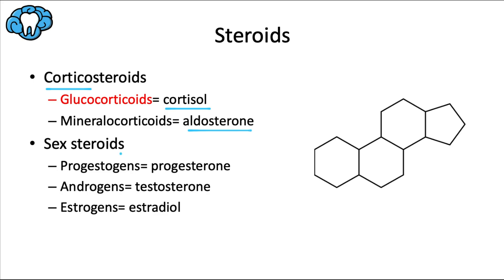The sex steroids are the second category, secreted by the sex organs. For progestogens, progesterone is the main one, which regulates cyclical changes in the endometrium and maintains pregnancy. For androgens, testosterone is the main one, contributing to development and maintenance of male secondary sex characteristics like facial hair and a deep voice. For estrogens, estradiol is the main one, contributing to female secondary sex characteristics.